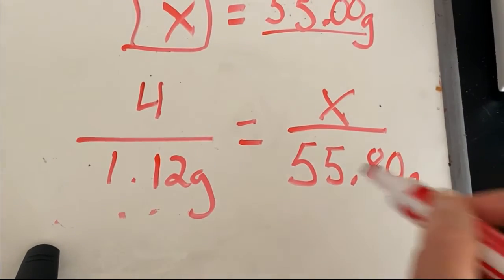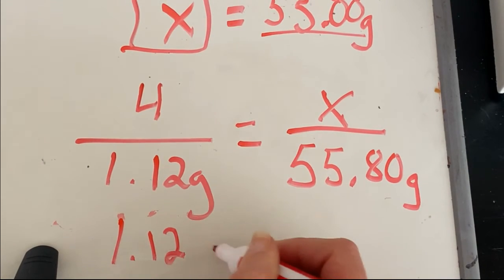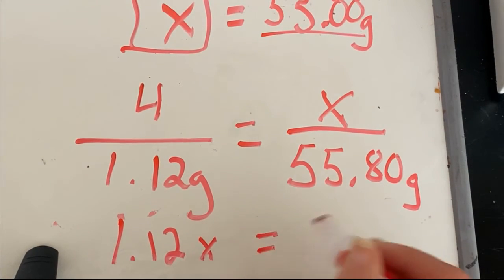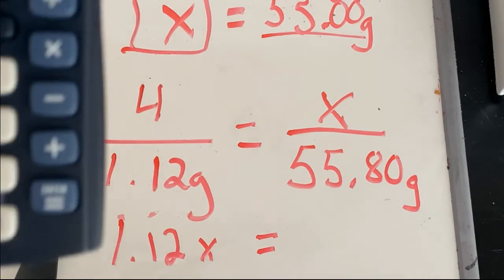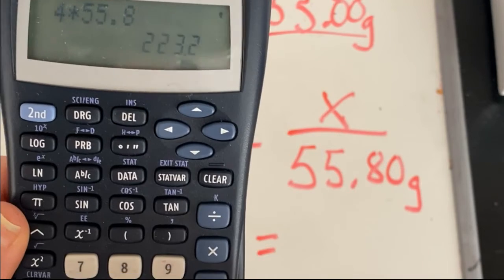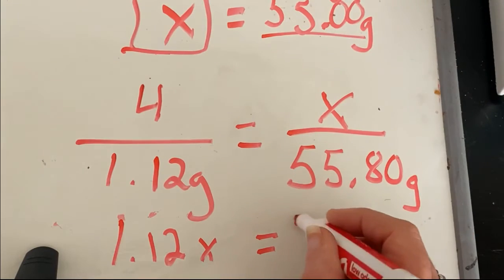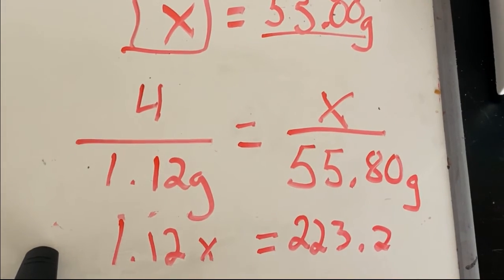So now you simply cross multiply and divide. So 1.12x equals 4 times, let me do my calculator quick, 4 times 55.8. That's what it should look like on your calculator. 4 times 55.8 and that is 223.2. And now we solve for x.